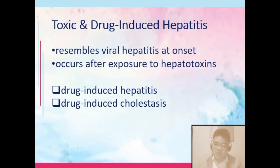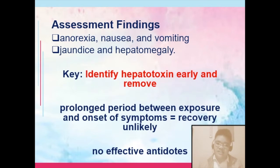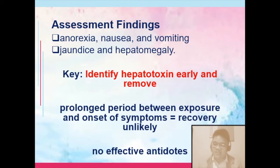Liver necrosis would occur within 2 to 3 days after acute exposure to dose-related hepatotoxins. If you're exposed to a very high dose of hepatotoxic substances, within 2 to 3 days, liver necrosis would ensue — the liver will not be able to function and not able to recover. Assessment findings include anorexia, nausea, vomiting, jaundice, and hepatomegaly. The signs and symptoms are the same as viral hepatitis. The key for recovery is to identify the hepatotoxin early and remove it. If it's a medication, discontinue it, because the longer the period between exposure and onset of symptoms, the recovery is already becoming unlikely.